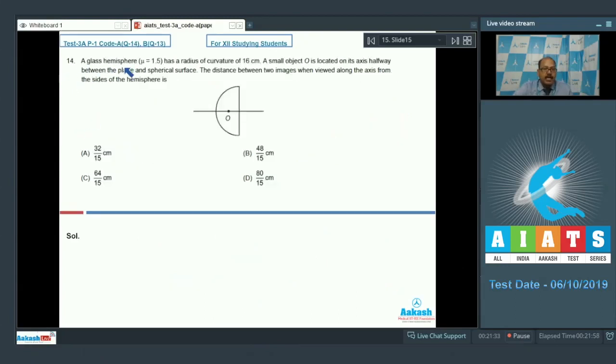Question 14 says, a glass hemisphere mu equal to 1.5 has a radius of curvature 16 cm. A small object O is located on its axis, halfway between the plane and the spherical surface. The distance between two images when viewed along the axis from the sides of the hemisphere is, these four options are given. The object is placed midway between the two sides. We have to find the distance between two images when viewed along the axis from the sides of the hemisphere. Let us first say that it is being viewed from this side. So, if it is being viewed from this side, we apply refraction, the concept of refraction at a spherical surface.